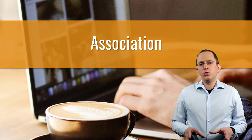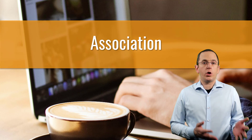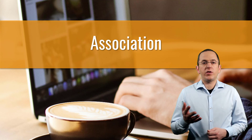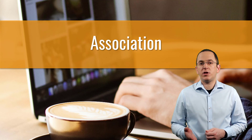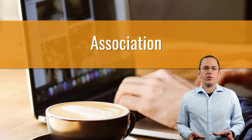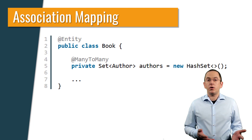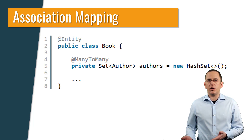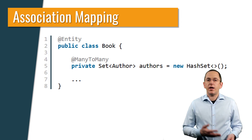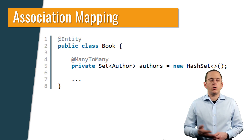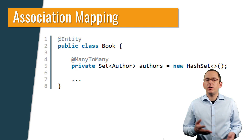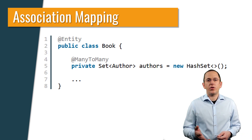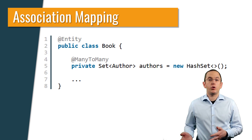If you're not completely new to Hibernate, I'm sure you have modeled at least one one-to-many or many-to-many association. These are the most common collection mappings because they are easy to implement, fit a relational table model very well, and provide great performance. To model such an association in your domain model, you only need to add an attribute of type Java Util List or Java Util Set to your entity class and annotate it with many-to-one or many-to-many. But that doesn't mean there are not several pitfalls you should avoid.